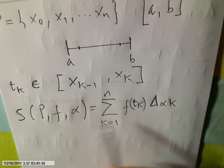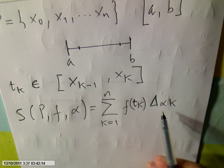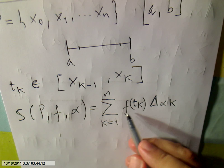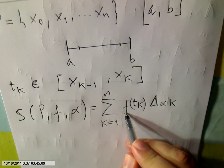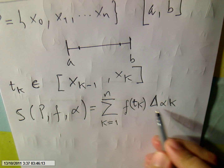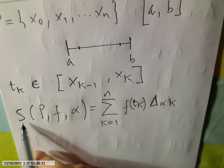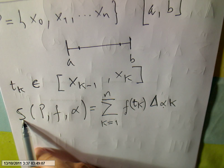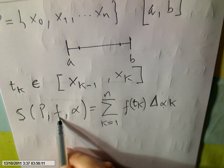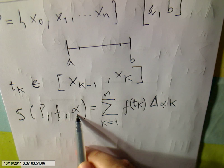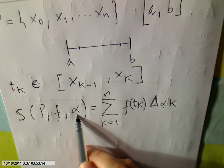We call this the Riemann-Stieltjes sum of f with respect to alpha.